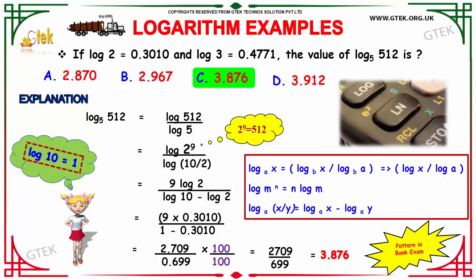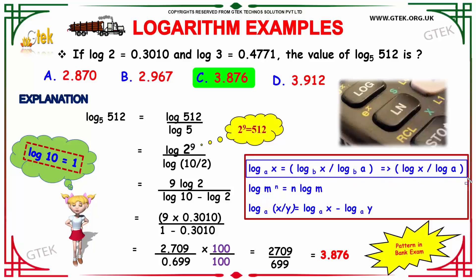The options are 2.870, 2.967, 3.876, and 3.912. We have to find the value of log 512 to the base 5. By using the change-of-base property, log x to the base a equals log x divided by log a. We can write log 512 to the base 5 as log 512 divided by log 5.